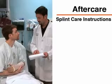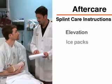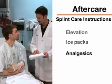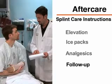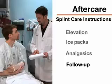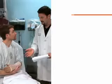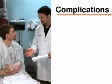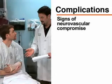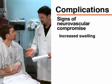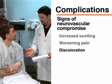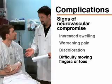Typical care after the application of a splint should include extremity elevation, application of ice packs, administration of analgesics, and appropriate communication of instructions for medical follow-up. Instruct the patient to keep the splint clean and dry and not to remove it until instructed. Give the patient verbal instructions and an easily understood written list of signs and symptoms that would necessitate urgent return for further evaluation. These include development of any signs of neurovascular compromise or compartment syndrome, such as increased swelling, worsening of pain, discoloration of the distal extremity, or difficulty moving the fingers or toes.